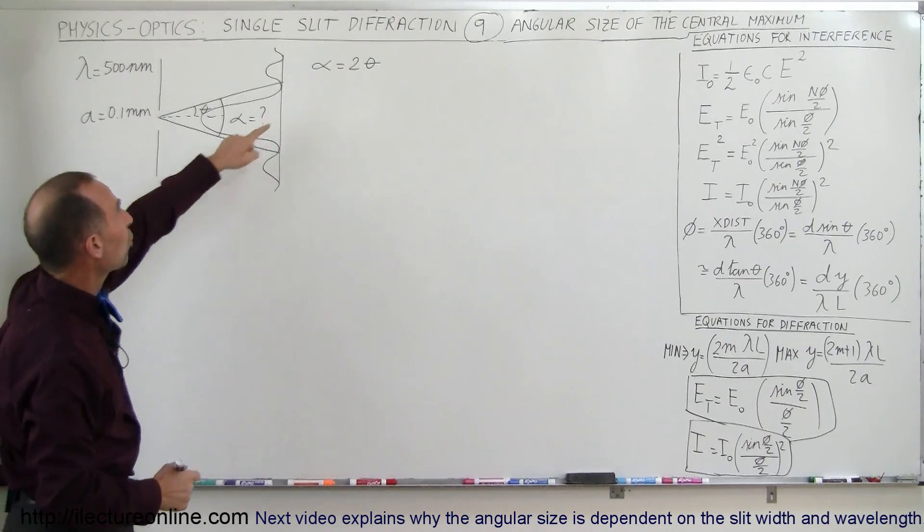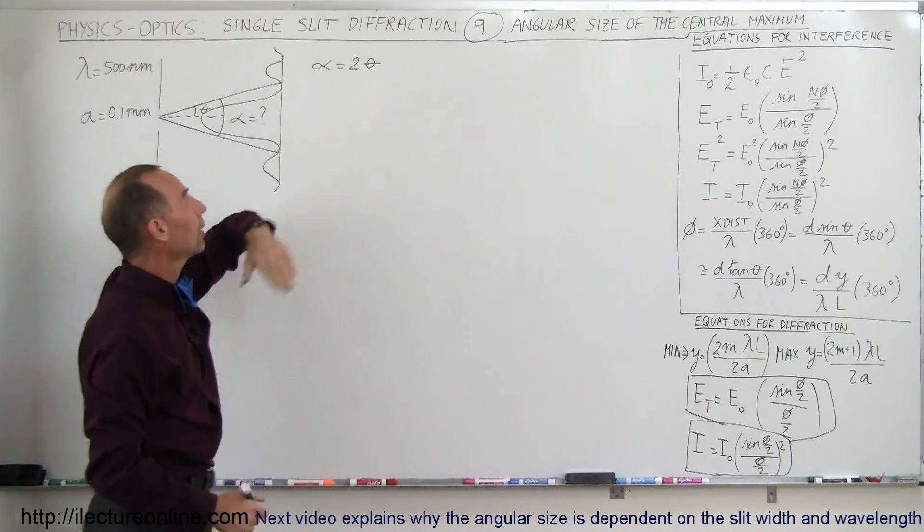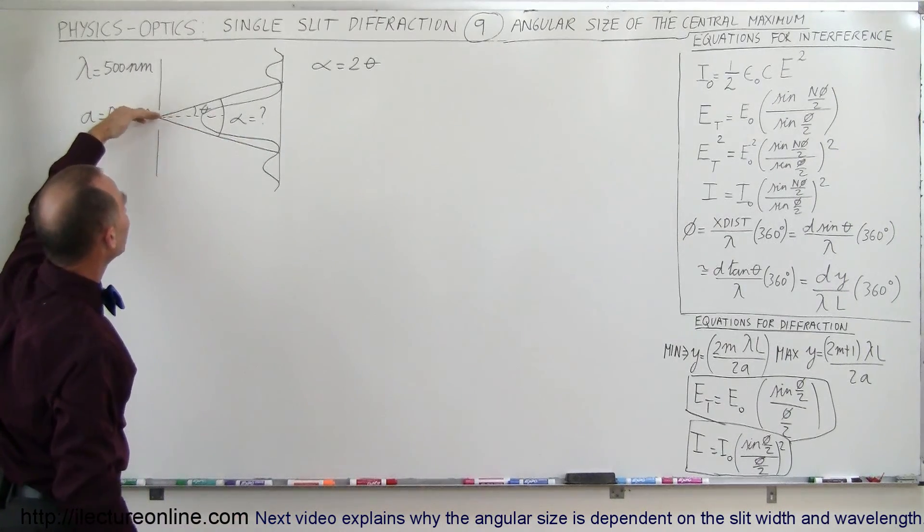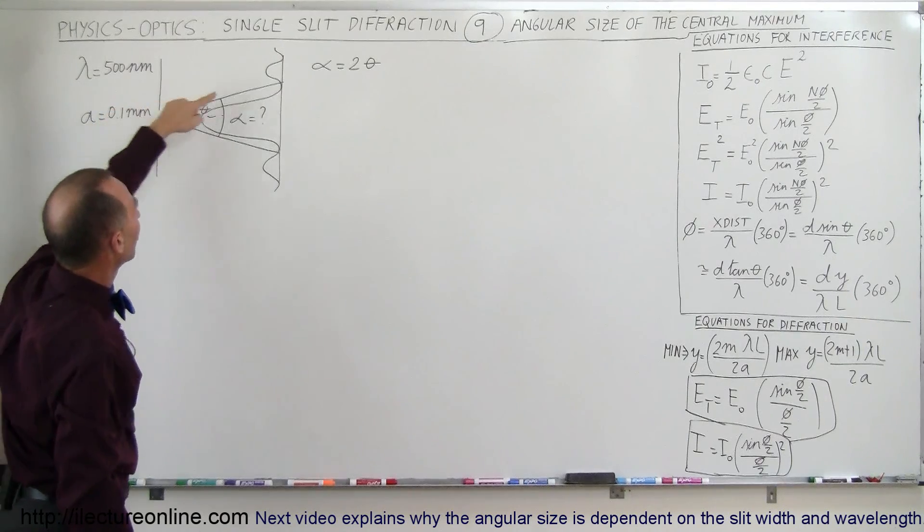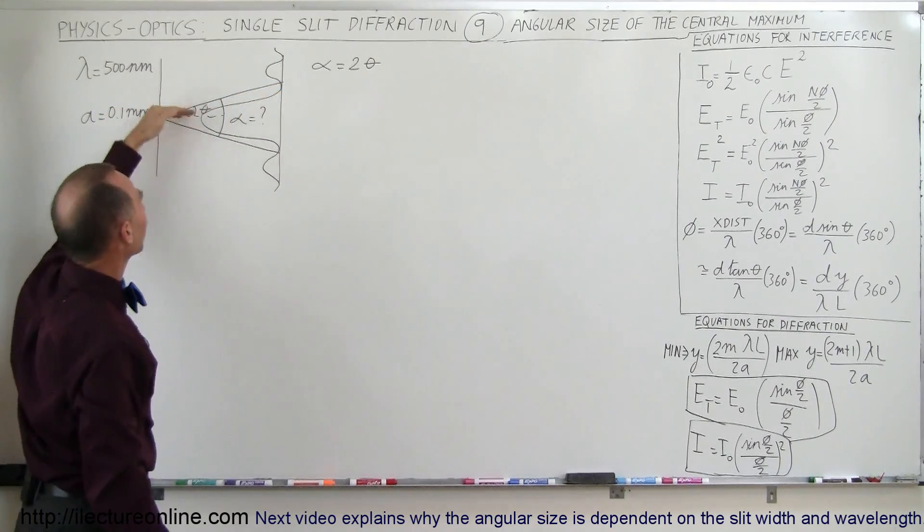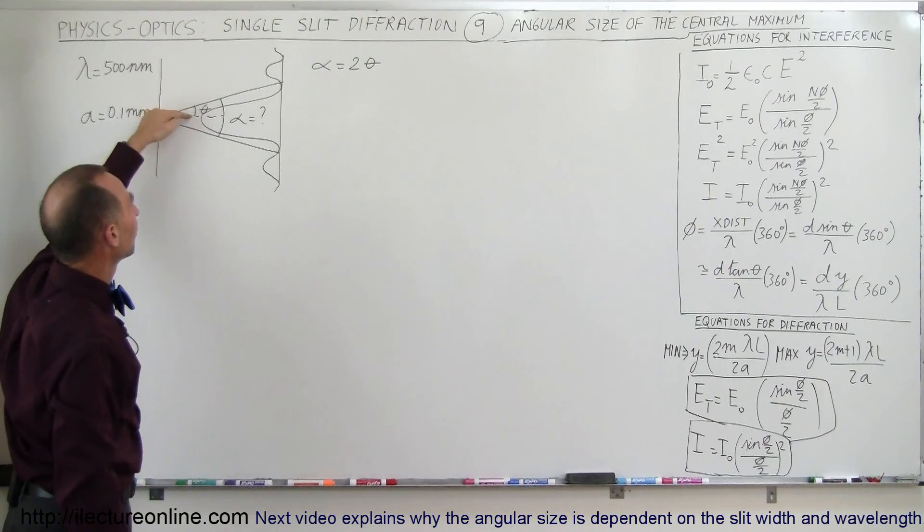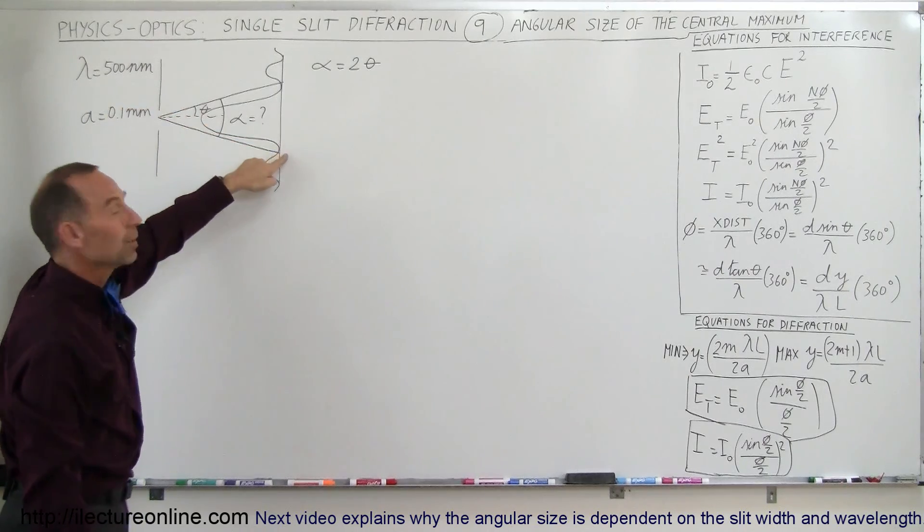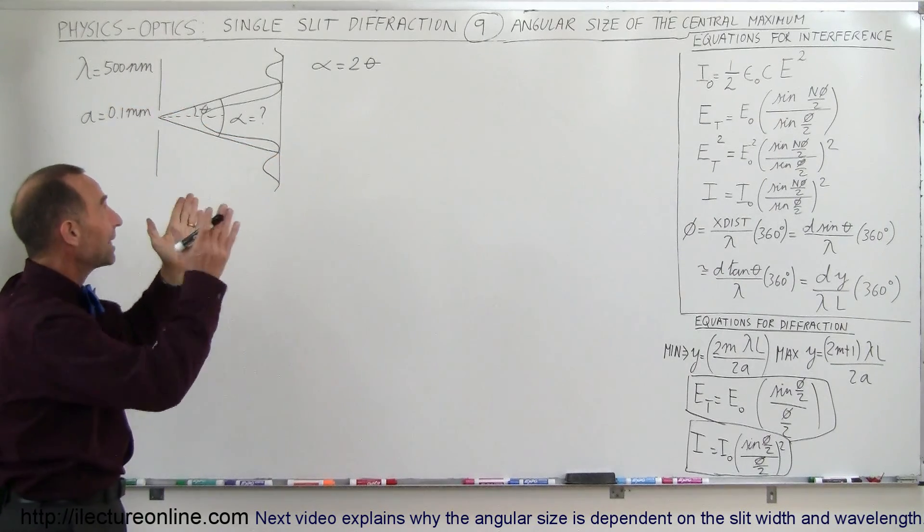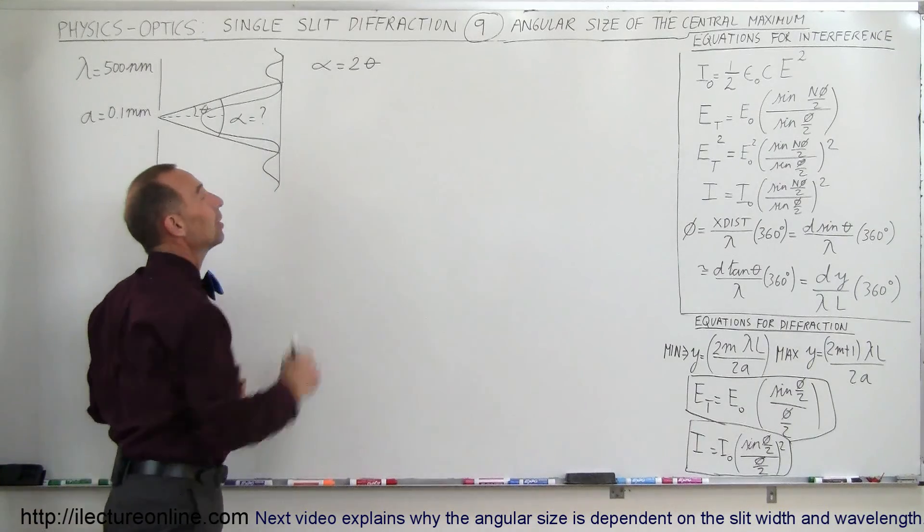So we know that's going to be twice the lookup angle theta. Theta would be the angle from the slit to the first minimum on one side, and of course it would also be theta from the slit to the first minimum on the other side. So the angular width would be two times the lookup angle.